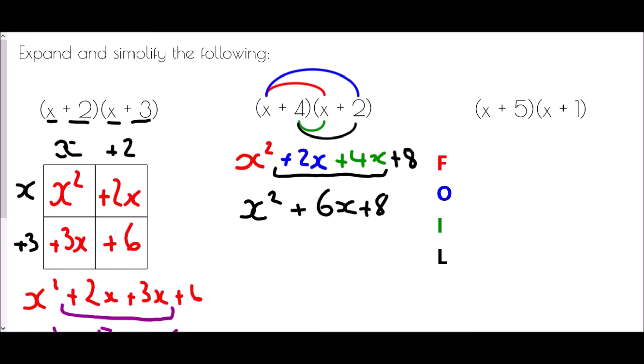The last method is known as FOIL — it's an acronym to remind us which pieces we're multiplying together. F stands for First, O for Outside, I for Inside, and L for Last.